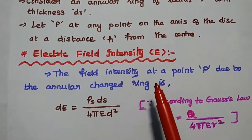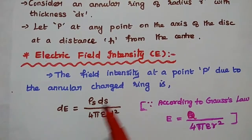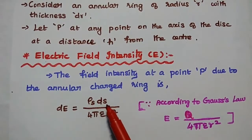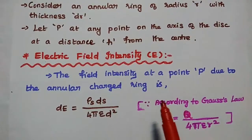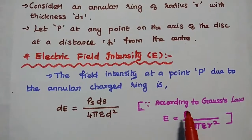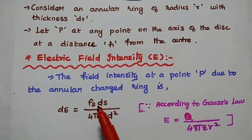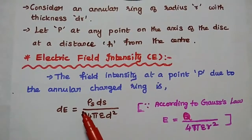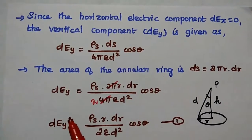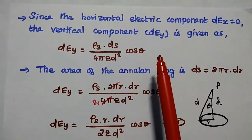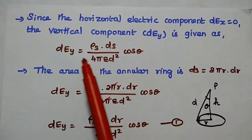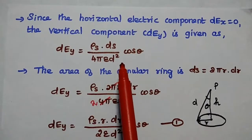The electric field intensity at point P due to the annular charged ring is dE, which equals rho s · ds divided by 4π·epsilon·d squared. This comes from the standard formula E = q / (4π·epsilon·r squared), where q is represented as rho s · ds for this small annular ring. The vertical component of the electric field at point P due to the annular ring is dEy = rho s · ds / (4π·epsilon·d squared) · cos theta.